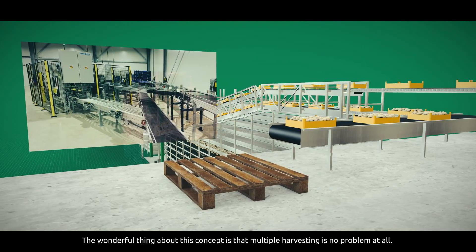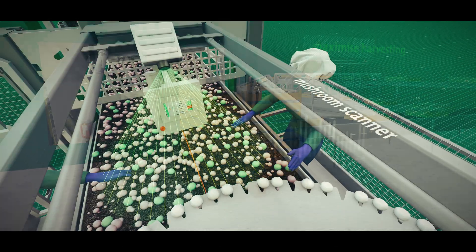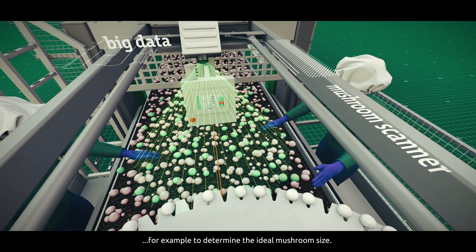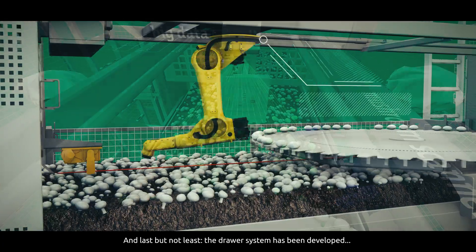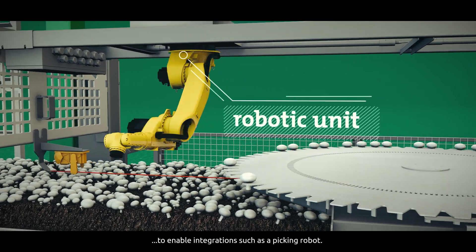The wonderful thing about this concept is that multiple harvesting is no problem at all. The use of big data is possible, for example to determine the ideal mushroom size, and last but not least, the drawer system has been developed to enable integrations such as a picking robot.